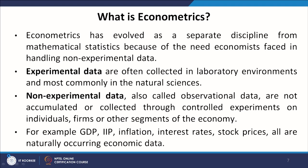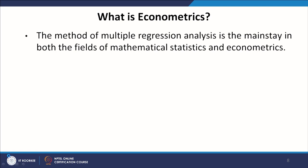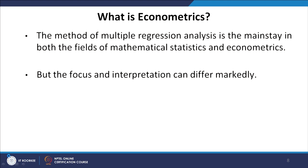GDP, IIP, inflation, interest rates, and stock prices are all naturally occurring economic data — these are macroeconomic data. When we talk about an individual's income and associated characteristics, then they are micro data collected at the micro level from individuals. The method of multiple regression analysis is the mainstay in both mathematical statistics and econometrics. Both subject areas heavily rely on multiple regression analysis, but the focus and interpretation can differ markedly. The way we look at a particular problem and try to address it could be very different from how it is handled by a mathematician or a statistician.